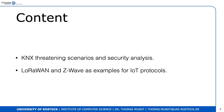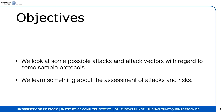LoRaWAN and Z-Wave are examples of IoT protocols. We look at security aspects, encryption, confidentiality, authentication, and so on. Those protocols are used via radio, so they are wireless protocols, and hence there's a higher need for security. The objectives of the lecture: we look at some possible attacks and attack vectors with regard to sample protocols — KNX, Z-Wave, and LoRaWAN. We learn about assessment of attacks and risks, and methodologies for assessing network security.